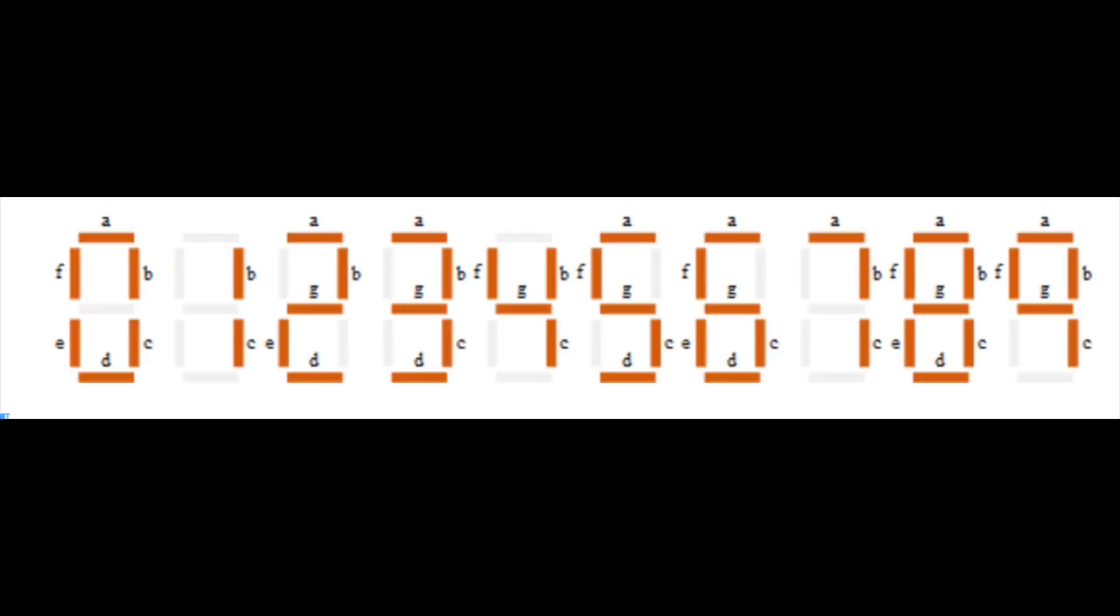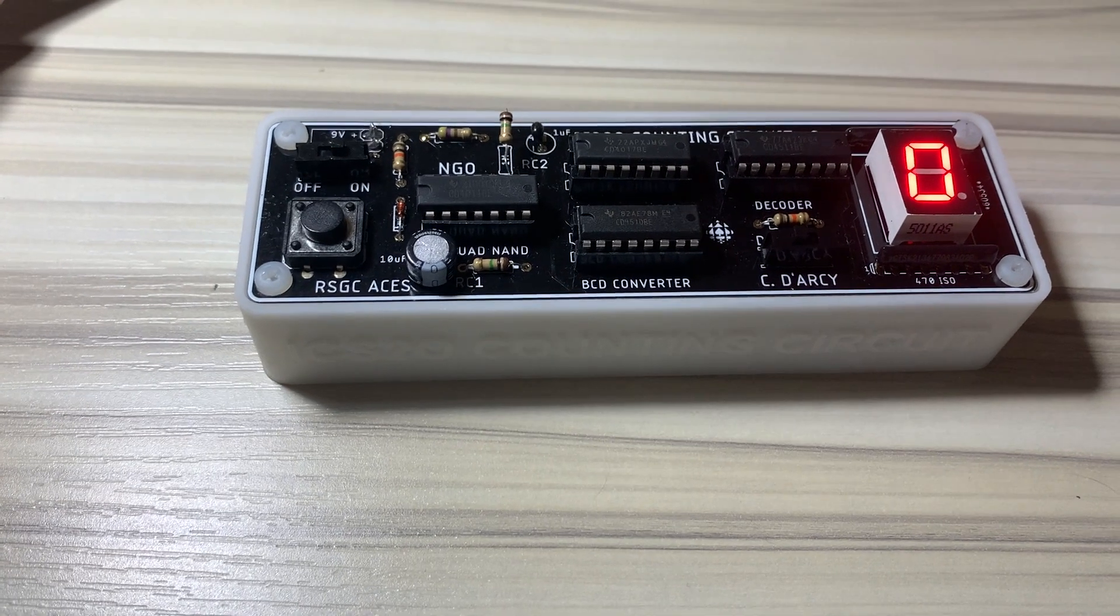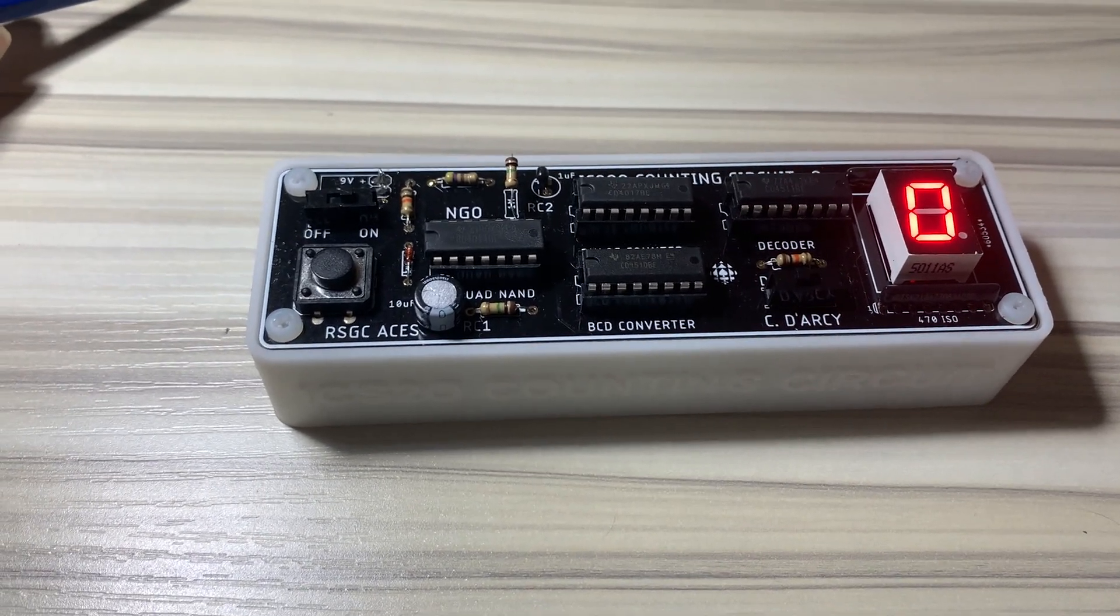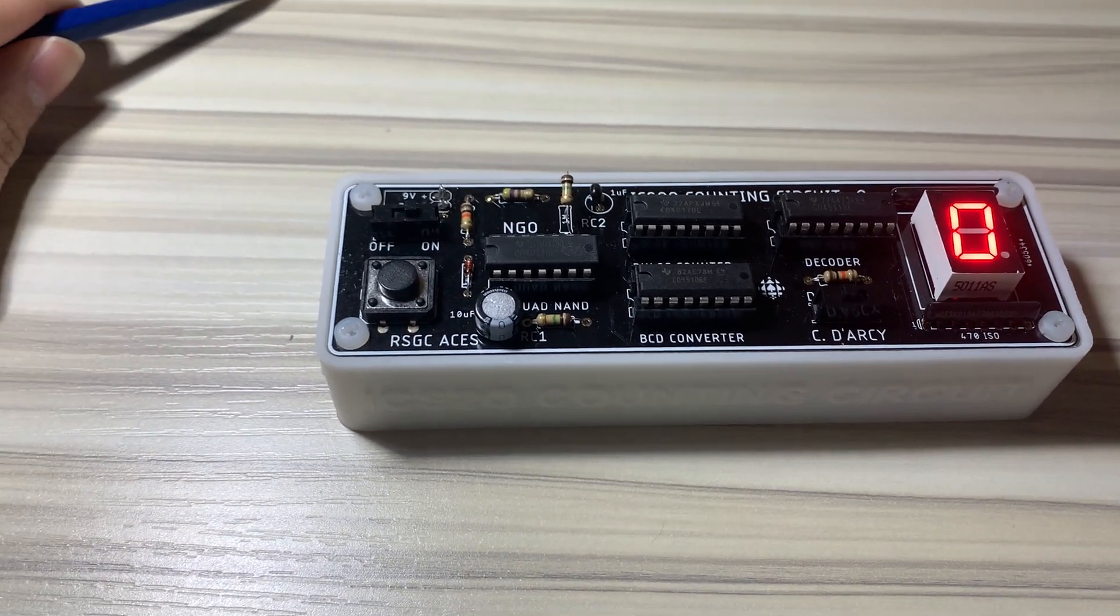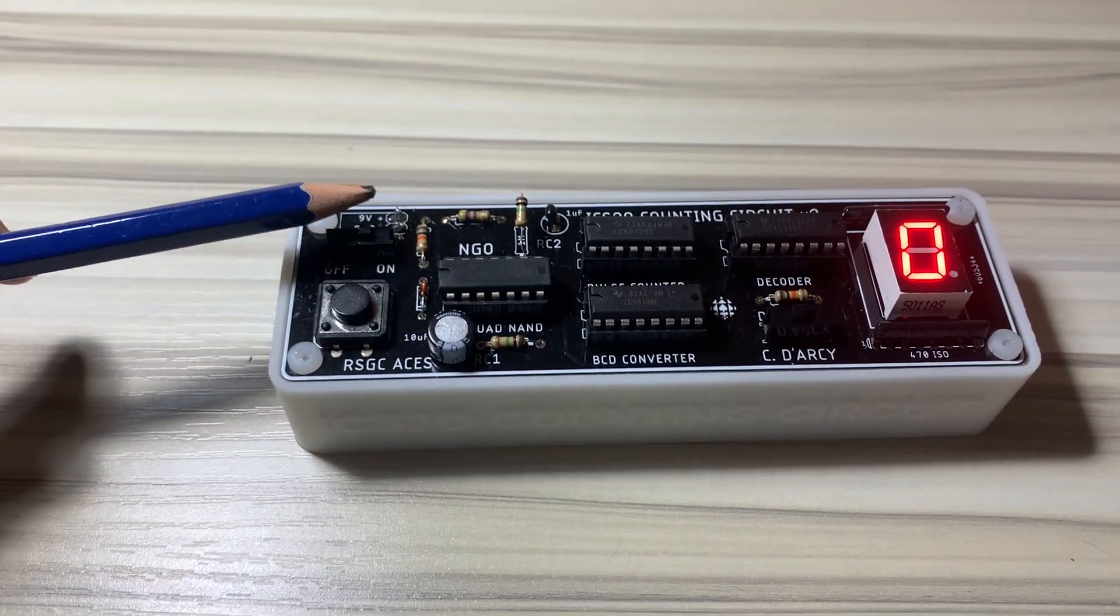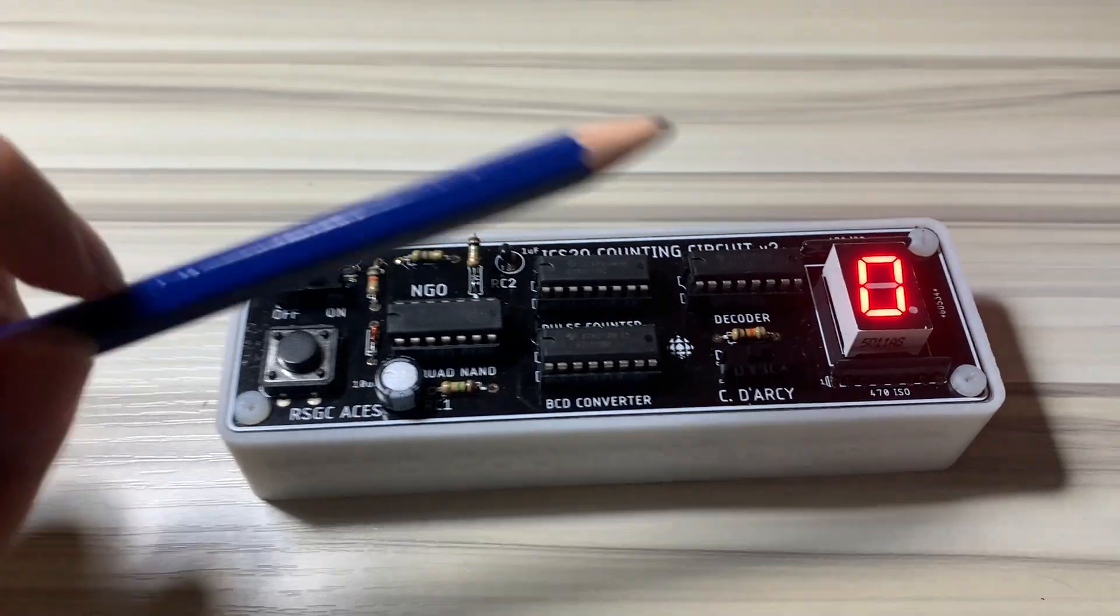This graphic shows all the segments that light up for each decimal number. Here is the final polished version of the counting circuit. The breadboard prototype has been transferred to its PCB form with a case. There are two SPDT slide switches. This one turns the circuit on and off, and this one controls the direction of counting.